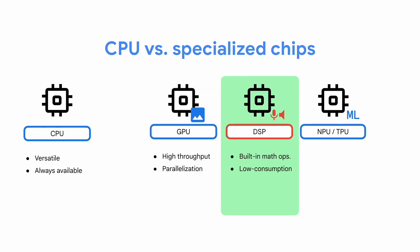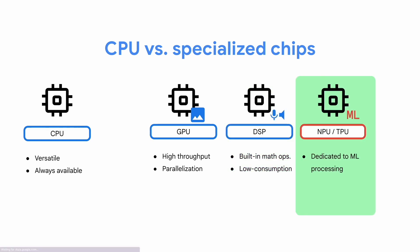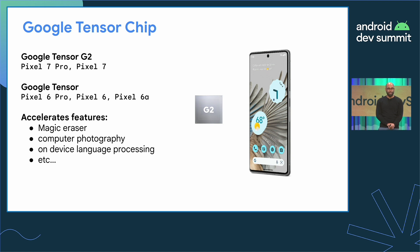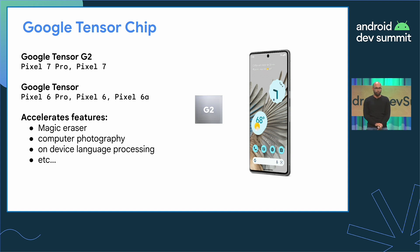DSPs are mainly used for analog-to-digital and digital-to-analog conversion of voice and sounds. They are designed to handle math-heavy processes and are optimized for low energy consumption. And finally, there are now chips designed and optimized for executing machine learning, such as NPUs and TPUs. After revolutionizing ML inference in the cloud, those chips are now becoming available on mobile devices — mostly on higher-end devices. For example, the Google Pixel 6 and 7 series embed the Google Tensor chip, enabling key Pixel features like Magic Eraser and on-device translation.